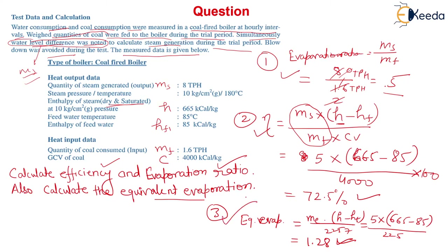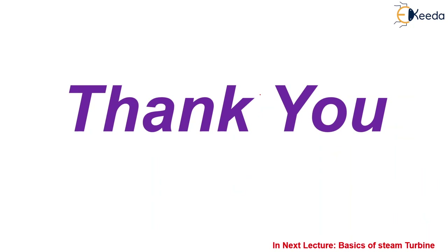This type of question is asked in examinations. In this video I have covered boiler performance, with three parameters: evaporation ratio, equivalent evaporation, and boiler efficiency. In the next video we will start the steam turbine and see its basics. Thanks for watching this video and have a good day.